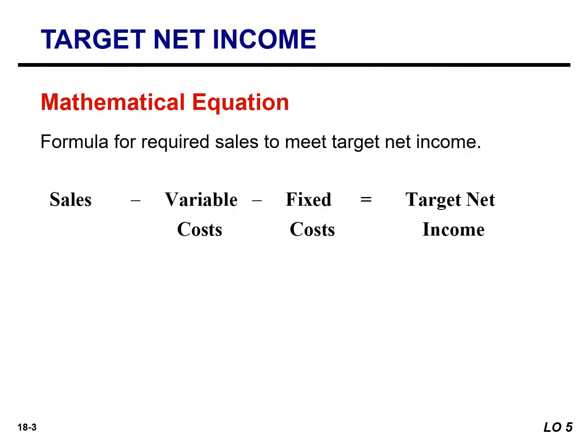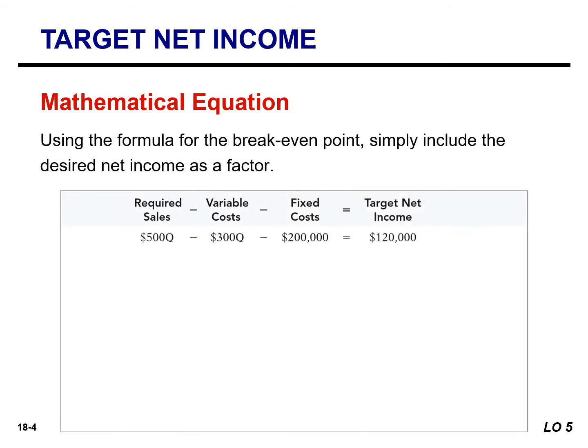We know that at the break-even point, no profit or loss results for the company. By adding an amount for target net income to the same basic equation, we can use the following formula to determine required sales. Recall that once the break-even point has been reached so that fixed costs are covered, each additional unit sold increases net income by the amount of the unit contribution margin. We can rewrite the equation with contribution margin — required sales minus variable cost — on the left-hand side, and fixed cost and target net income on the right-hand side.